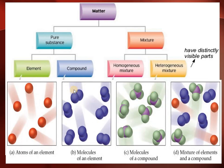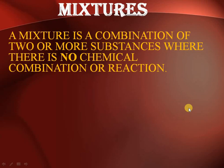This diagram shows an atom of one type of element, a molecule of one type of atom, and a molecule of two types of atoms or two elements — and this is a mixture containing atoms of one type, molecules of another type, and a compound. A mixture is a combination of two or more substances where there is no chemical combination or reaction, unlike compounds where there is a chemical reaction.